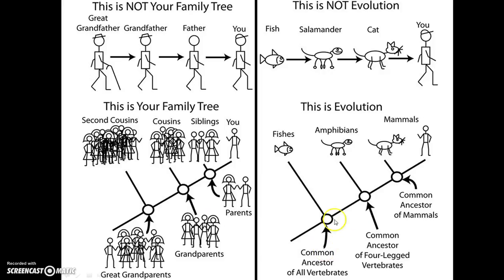Here's the common ancestor of all vertebrates. Fishes are fairly primitive — they evolved fairly early on. We had a common ancestor of four-legged vertebrates that arose eventually, and one of those branches gave rise to amphibians. Here we have a common ancestor of mammals — the example here would be a cat — but of course there are many different branches leading to rodents, marsupials, monotremes, and all of the extant groups of mammals. Humans are one tiny branch on that evolutionary tree.